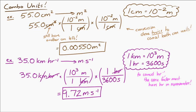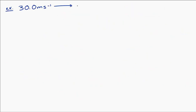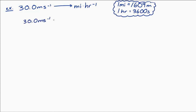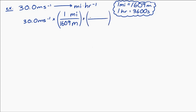Let's try another: 30.0 meters per second converted to miles per hour. One mile is 1,609 meters and one hour is 3,600 seconds. Starting with 30.0 m/s, I want to get rid of meters, so 1 mile over 1,609 meters goes in my conversion factor. Then to cancel the seconds in the denominator, I put 3,600 seconds over 1 hour in my next conversion factor. Working out the math, I get 67.1 miles per hour.